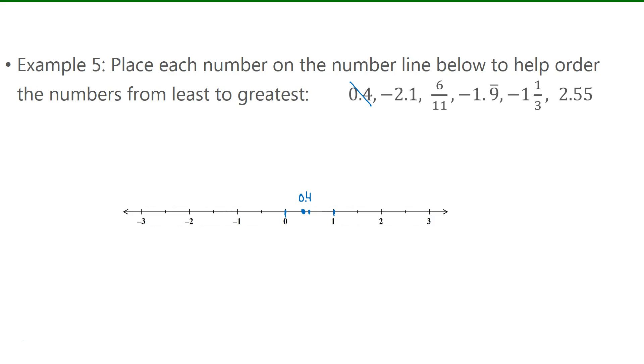Negative 2.1. So I find negative 2 here. So just past that, it is negative 2.1. Now 6 over 11. I'm just going to put that into my calculator to see what that is as a decimal. It's 0.545454. So 0.54 repeating.